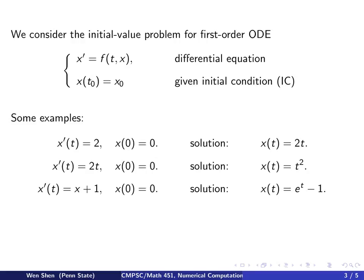Another example: x prime equals to x plus 1, x(0) equal to 0. The solution will be e^t minus 1. If you don't know how to obtain this solution, at least one could plug this function back into the ODE. Differentiate x prime and put on the left-hand side, then plug in the expression for x on the right-hand side. One can verify the equation holds, and one can verify the initial condition also holds. Therefore, this is the solution.